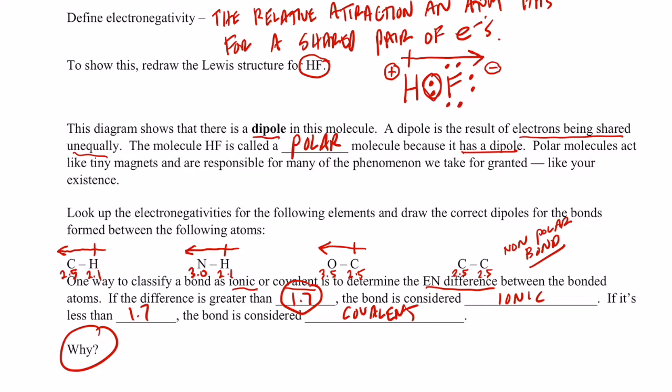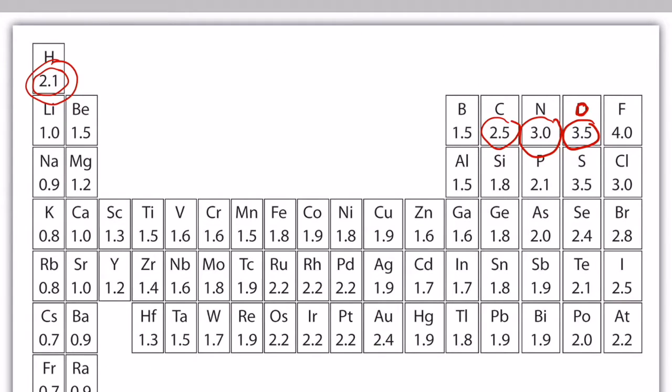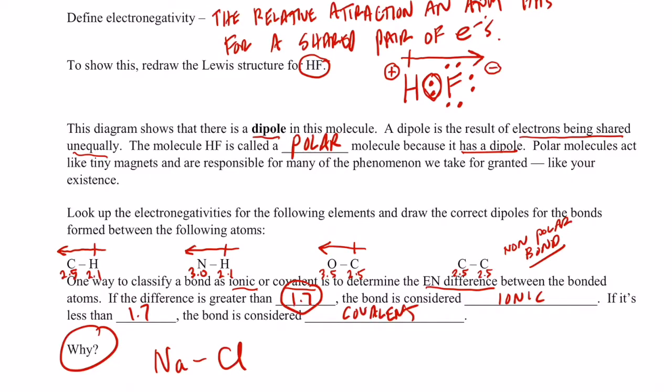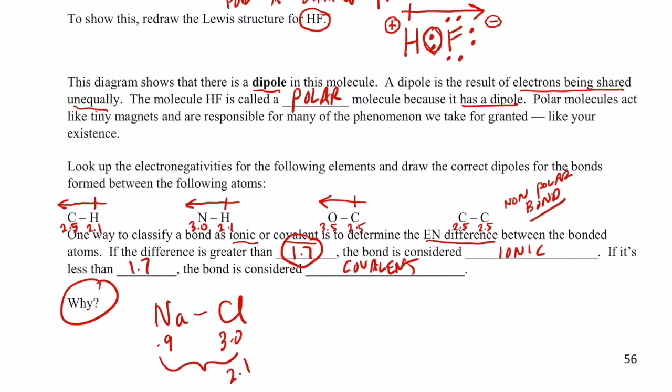Well, let's take for instance Na being bonded to Cl. Let's take a look at their electronegativities. Sodium is 0.9, chlorine is 3.0. 0.9 and 3.0. Isn't that difference 2.1? That means that the electrons are not shared equally at all. In fact, they are transferred.